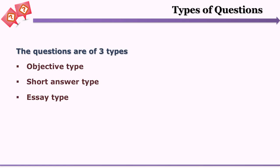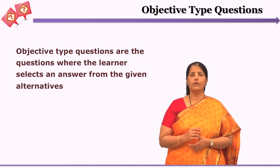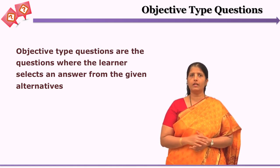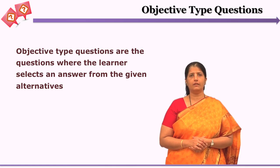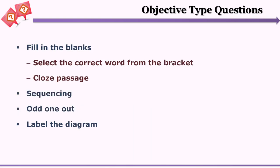The three types are: objective type, short answer type, and essay type. Objective type questions are those for which the learner selects the answer from given alternatives. The different varieties categorized under objective type are: multiple choice questions, match the columns, true or false, fill in the blanks, sequencing, odd one out, and label the diagram.